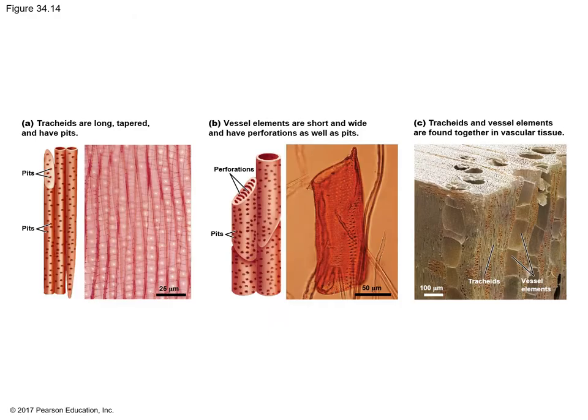If you look at figure A, you can see these long tapered tubes which have pits — these are the tracheids. In figure B, you will see the vessel elements which are found in angiosperms. These are shorter and wide, but they are also tapered and have perforations as well as pits. And in C, you will see the tracheids and the vessel elements together in vascular tissue.